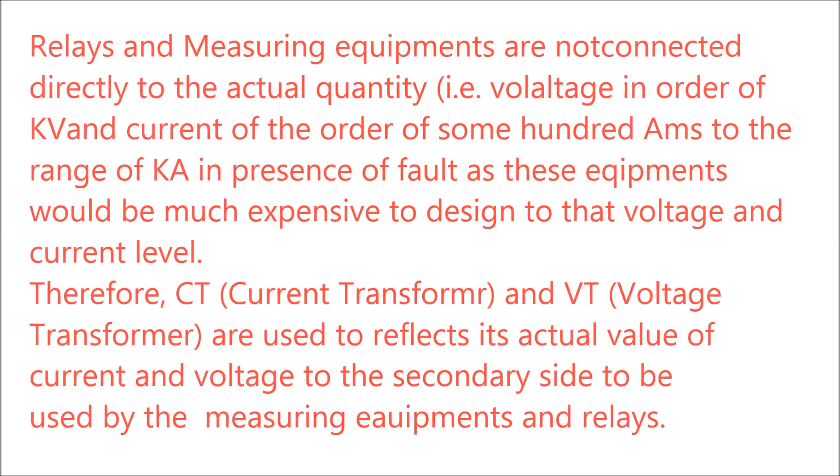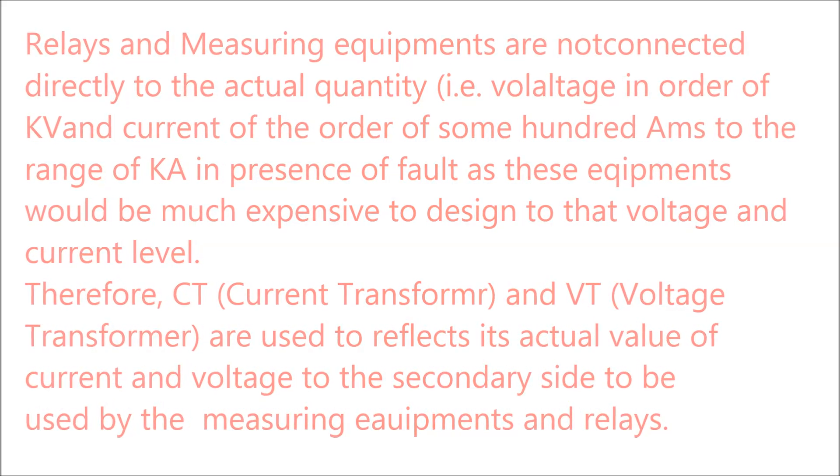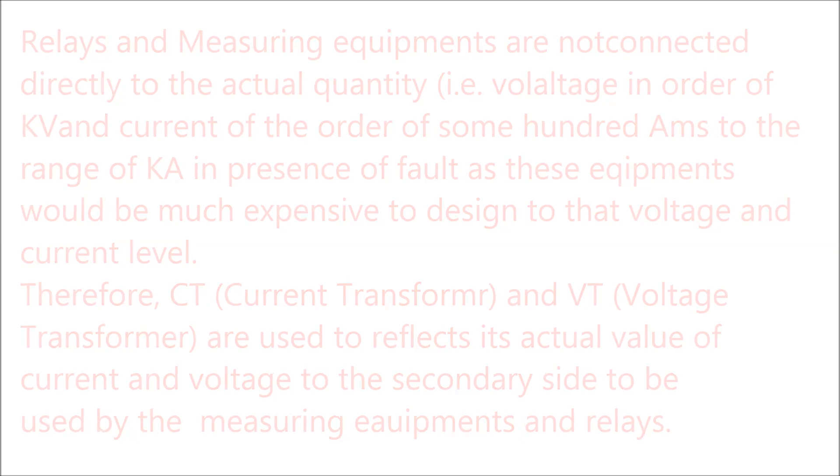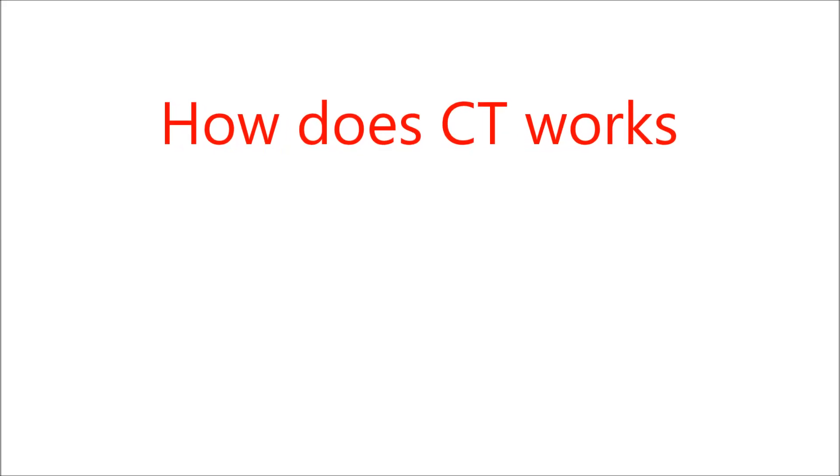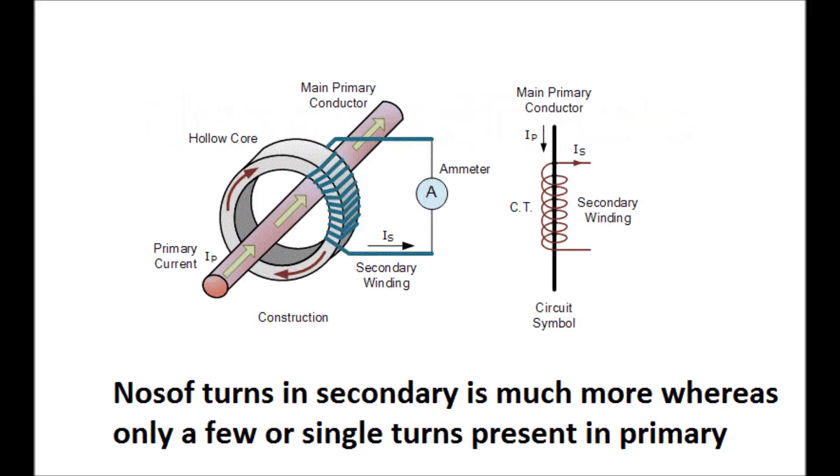Therefore, current transformer CT and PT voltage transformer are used to reflect its actual value of the current and voltage to the secondary site to be used by the measuring equipment and relays. How does CT and PT work? Now, we will see how a CT or current transformer works.